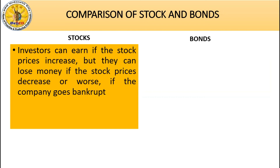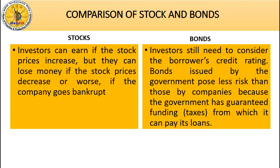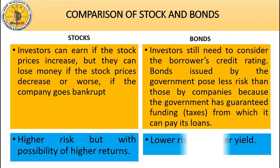In trading stocks, it is suggested to use a cut loss or stop loss strategy. For bonds, investors still need to consider the borrower's credit rating. Bonds issued by the government pose less risk than those issued by companies because the government has guaranteed funding through taxes to pay its loans. In summary: stocks carry higher risk but the possibility of higher returns, while bonds carry lower risk but lower yield.